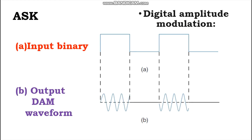Looking at the graphical behavior — the input and output waveforms from the ASK modulator — for every change in the input binary stream, there is one change in the ASK waveform, and the time of one bit tb equals the time of one analog signal element ts. For the entire time the binary input is high, the output is a constant amplitude, constant frequency signal. When the binary input is low, the carrier is off.